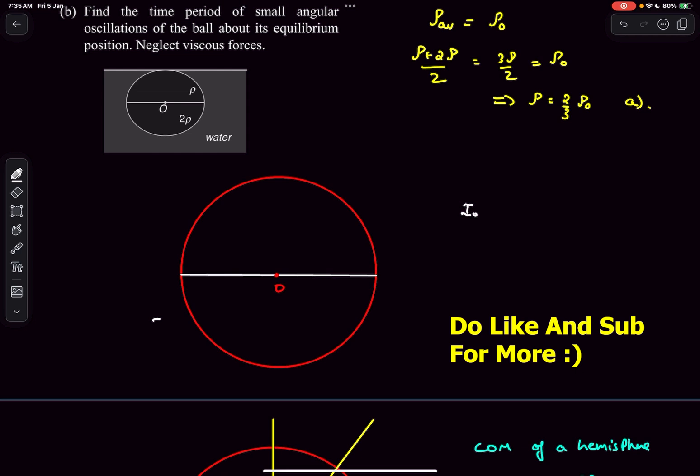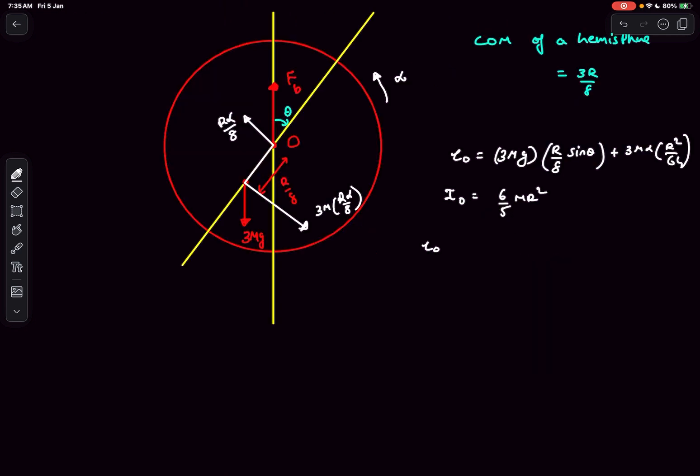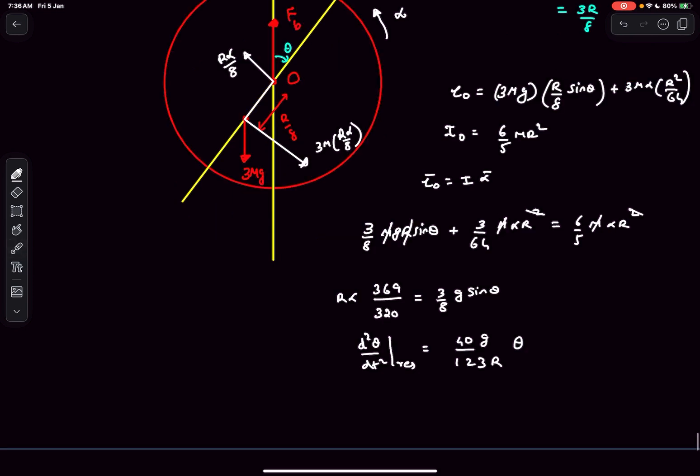The moment of inertia contribution due to the upper hemisphere is 2 by 5 MR square, and the contribution due to the lower hemisphere is 2 by 5 times 2MR square. This becomes 6 by 5 MR square. So now we can simply write tau about O equal to I times alpha about O. After solving, you get this expression. We're talking about small angular oscillations, so sin theta can be approximated as theta. The restoring alpha comes out to be directly proportional to theta, which means that the oscillations under consideration is an SHM.